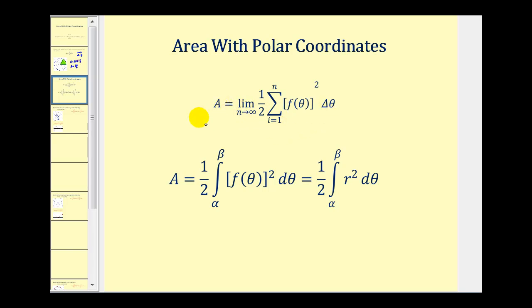So this area is equal to one half times the definite integral from alpha to beta of r squared d theta. And r squared is the same as, and r is the same as f of theta, so it can be written either way. Let's go ahead and take a look at an example.